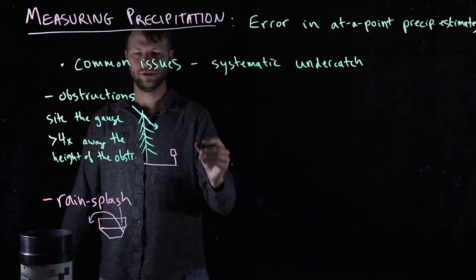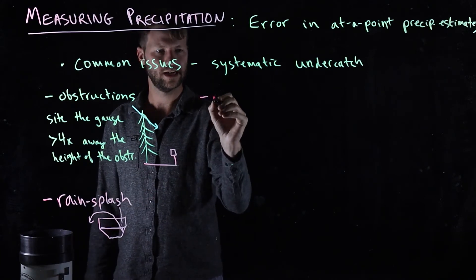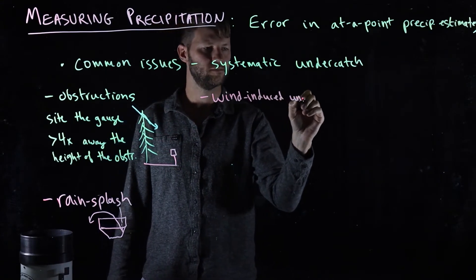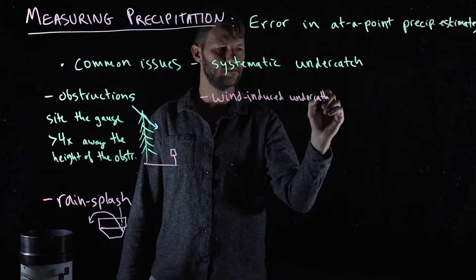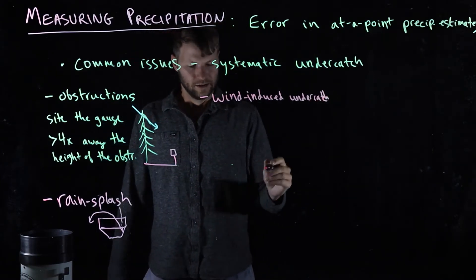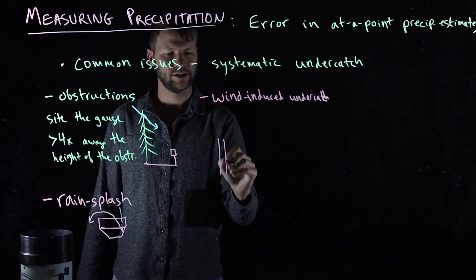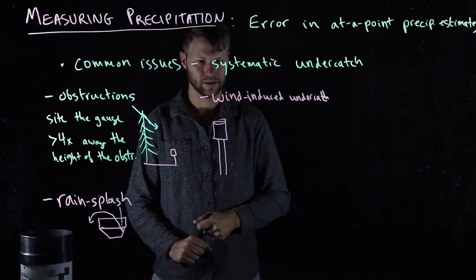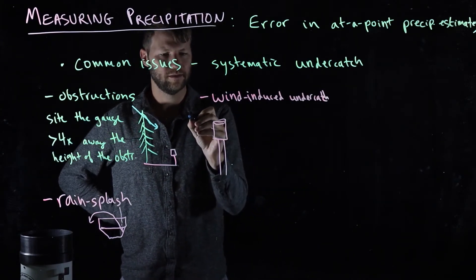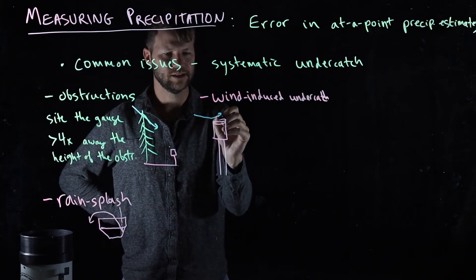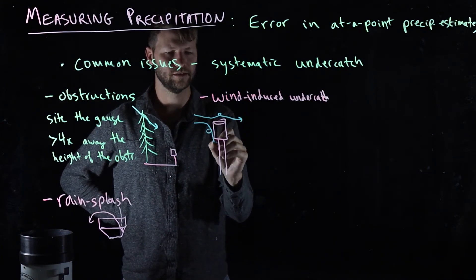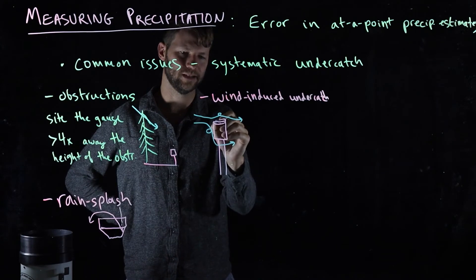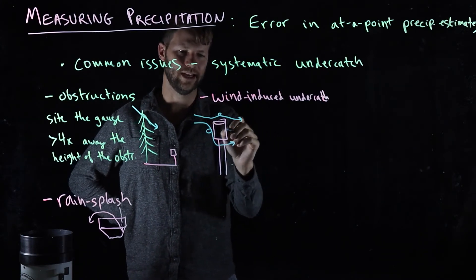One of the other common issues is the phenomenon known as wind-induced undercatch. And the idea here is that if you have a rain gauge that's up on a pole and it's windy, the wind as it's moving about the gauge can result in eddies, little turbulent motions of the air that will redirect raindrops that are falling and that should have landed in the gauge out of the gauge, and so they won't be counted.